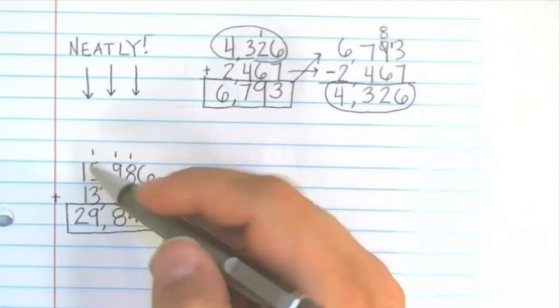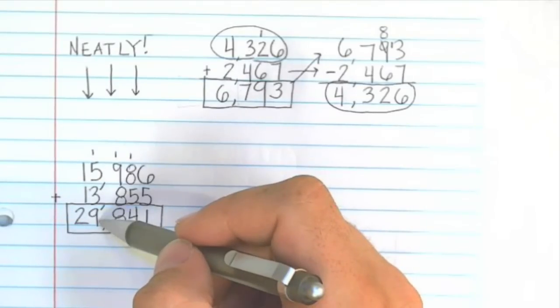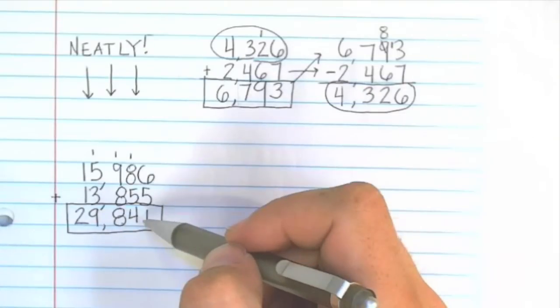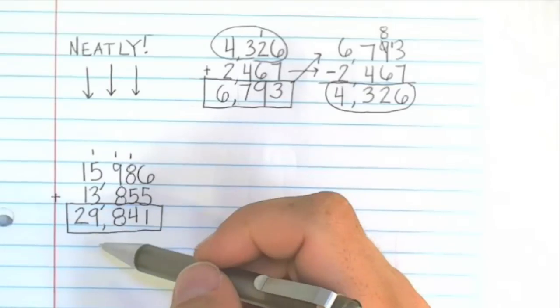And our sum is 29,841. So this 2 is in the 10,000s place. The 9 is in the 1,000s place. The 8 is in the 100s place. The 4 is in the 10s place. And the 1 is in the 1s place. 29,841. Let's check that using the inverse operation.